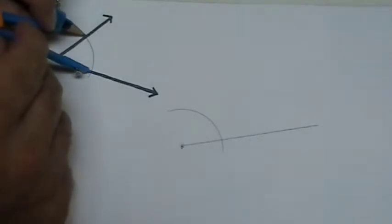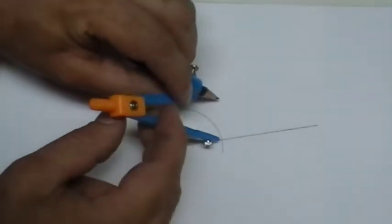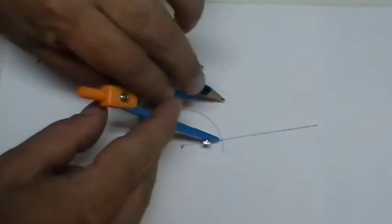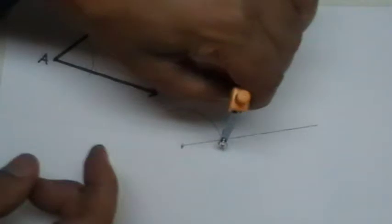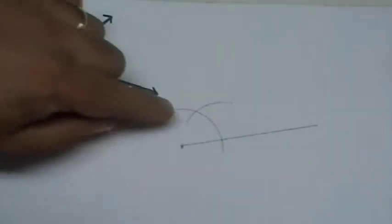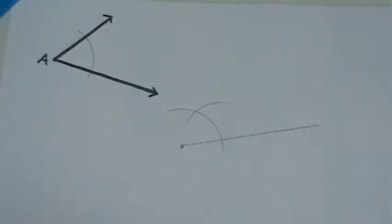We place it with the point on the intersection of our new angle where the arc and the initial ray meet and we can draw a second arc. That second arc gives us an intersection.